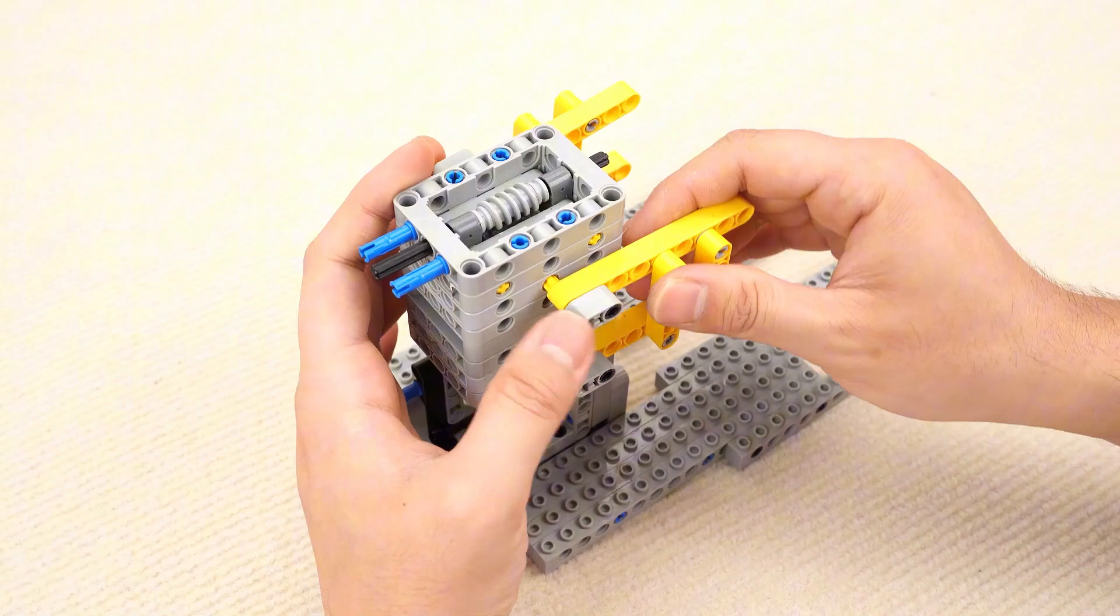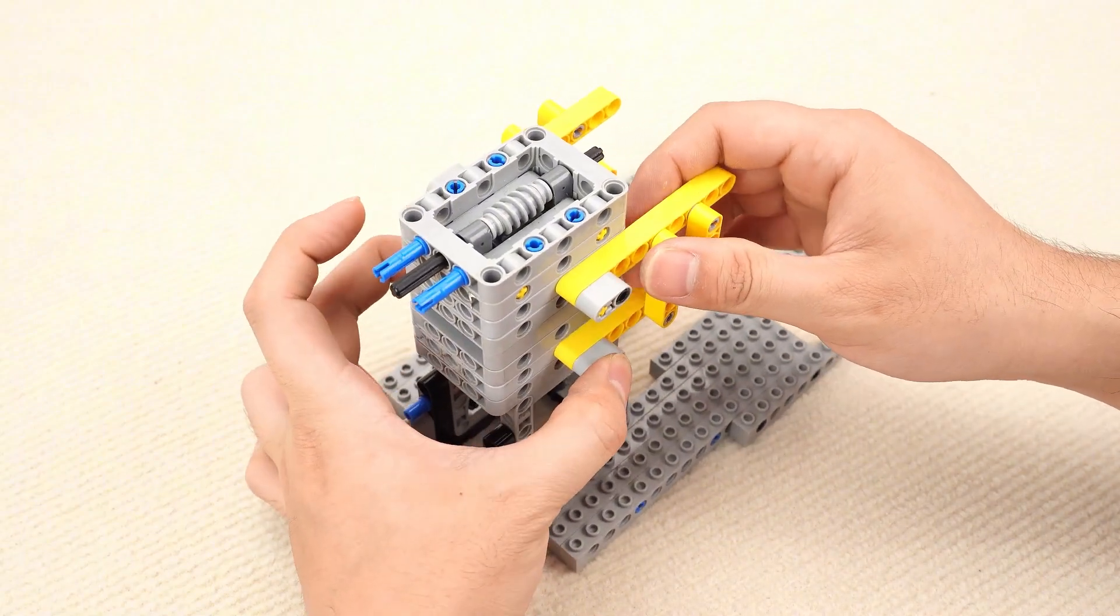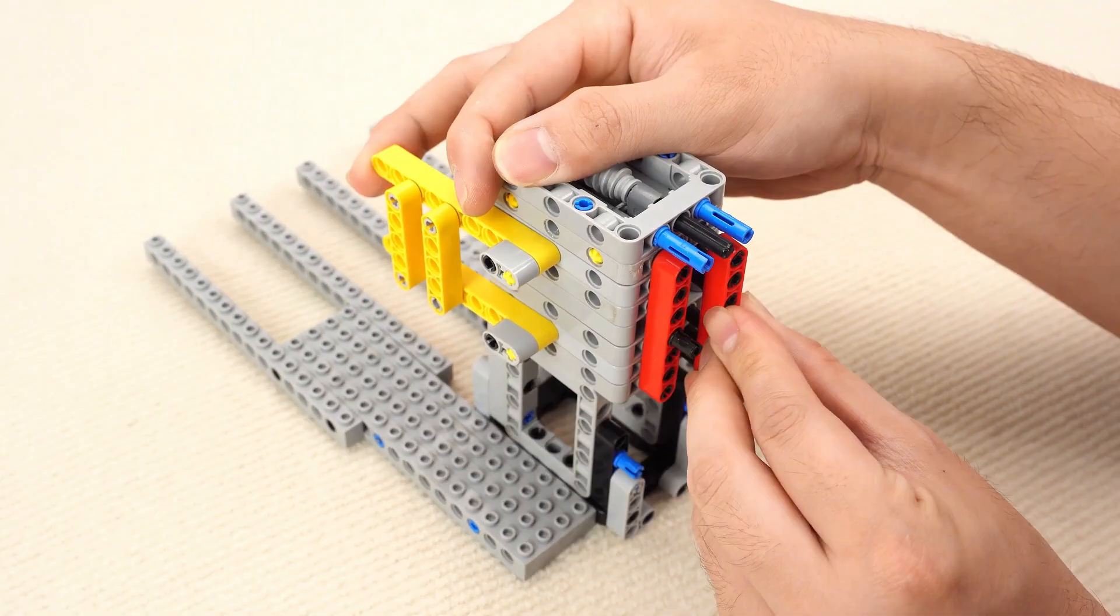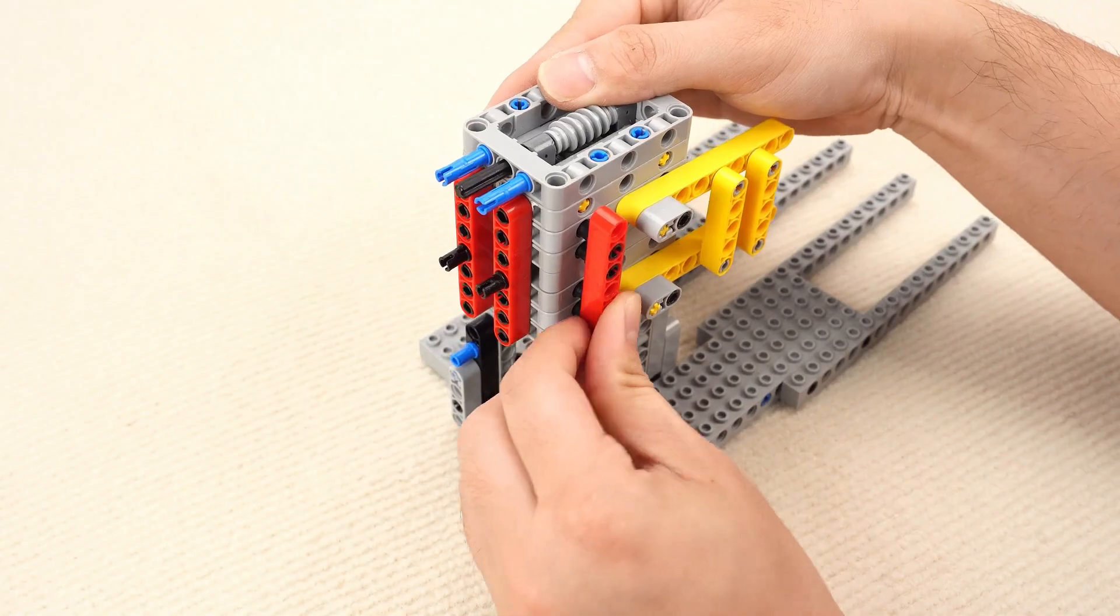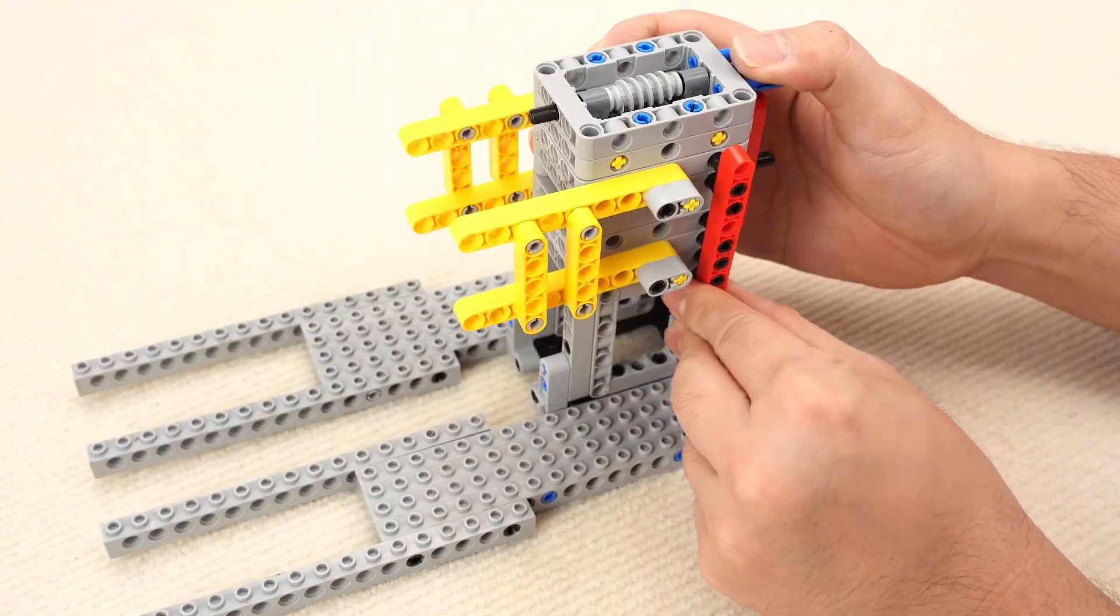Flat Technic panels and beams are connected to create a sturdy base. Then, we'll add some reinforcing bars.